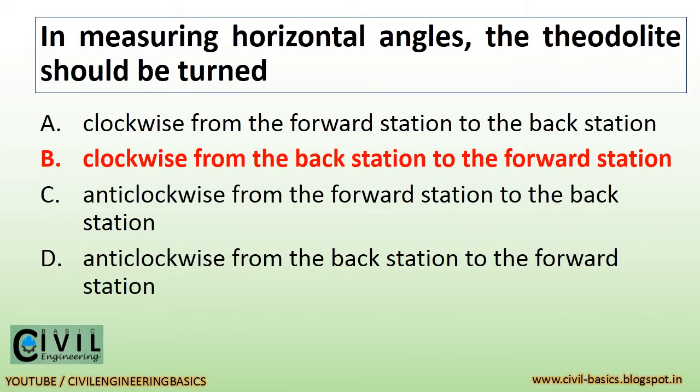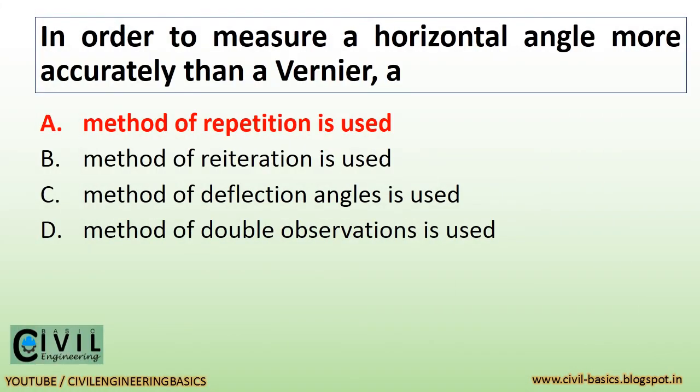In measuring horizontal angles, the theodolite should be turned clockwise from the back station to the forward station. In order to measure a horizontal angle more accurately than a vernier, a method of repetition is used.